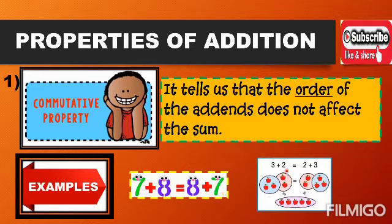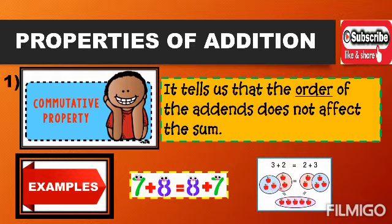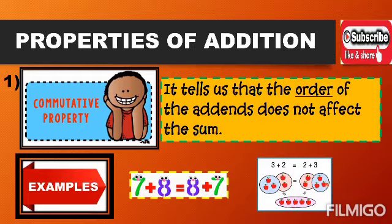The second example uses 3 and 2. I changed the position, so on the other side we have 2 plus 3. I used pictures of apples to visualize the problem. We have 3 apples plus 2 apples, and on the right side, 2 apples plus 3 apples. Combining 3 apples plus 2 apples equals 5 apples. The same on the right side — 2 plus 3 still equals 5. Even if you change the order or position of the addends, it will not affect the sum.